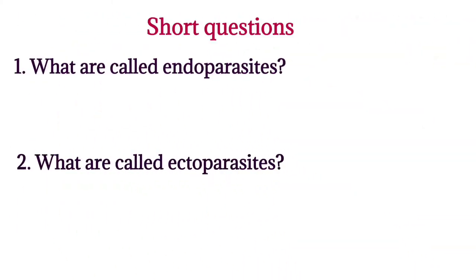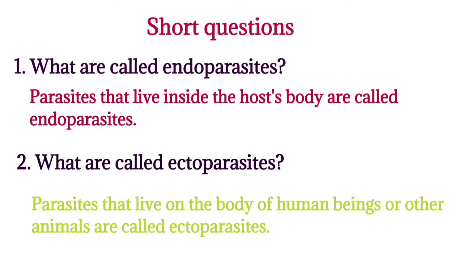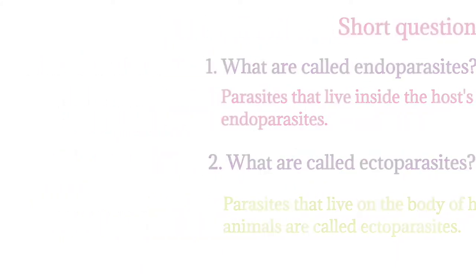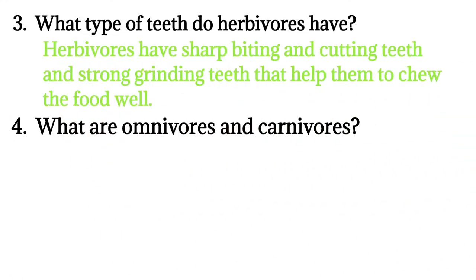Short questions. One: what are called endoparasites? Parasites that live inside the host's body are called endoparasites. Two: what are called ectoparasites? Parasites that live on the body of human beings or other animals are called ectoparasites. Three: what type of teeth do herbivores have? Herbivores have sharp biting and cutting teeth and strong grinding teeth that help them to chew food well.